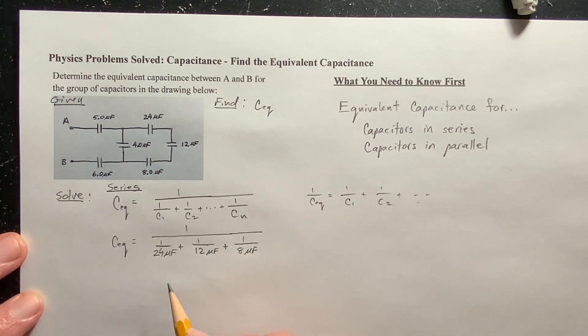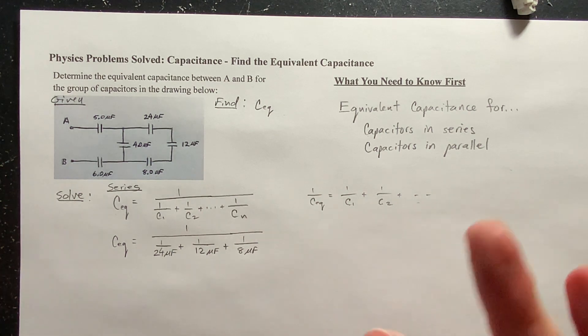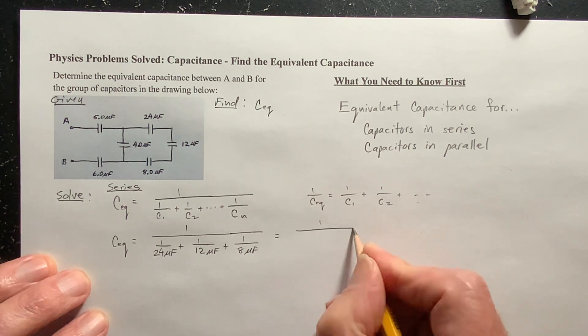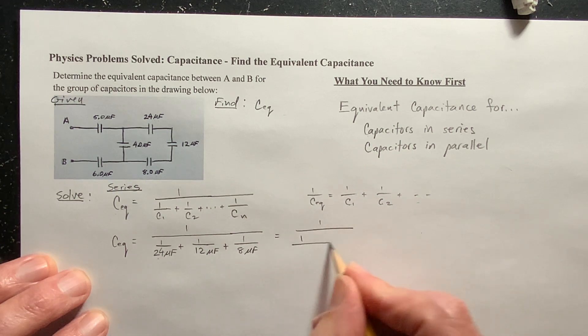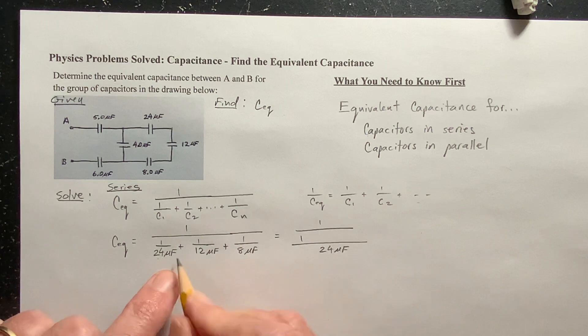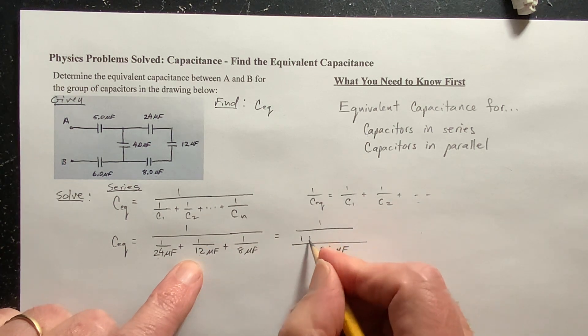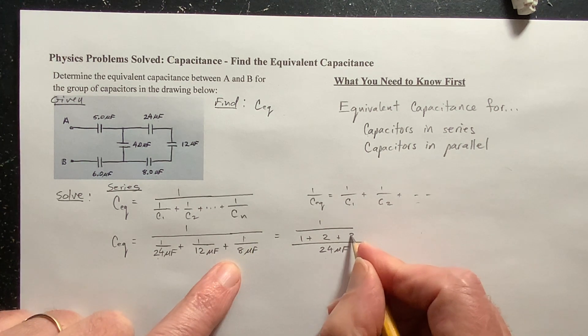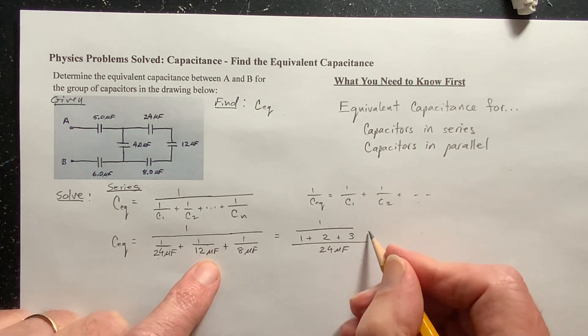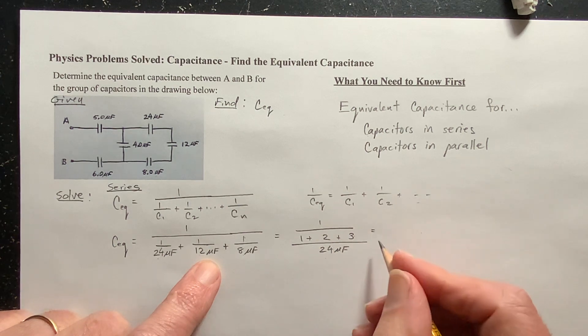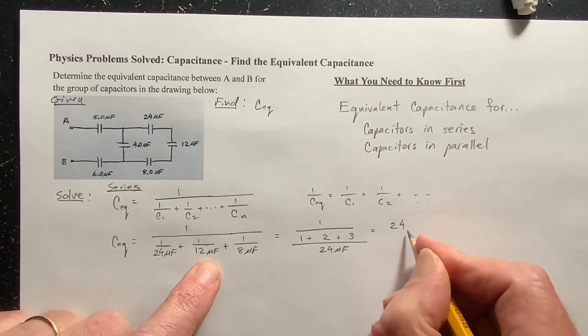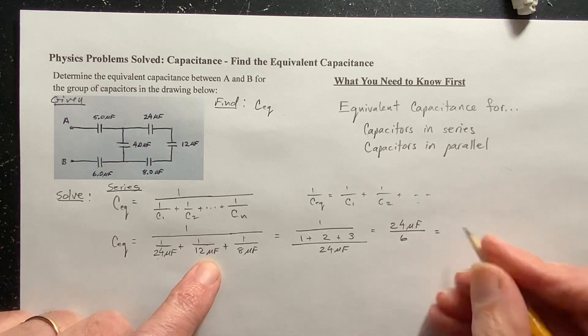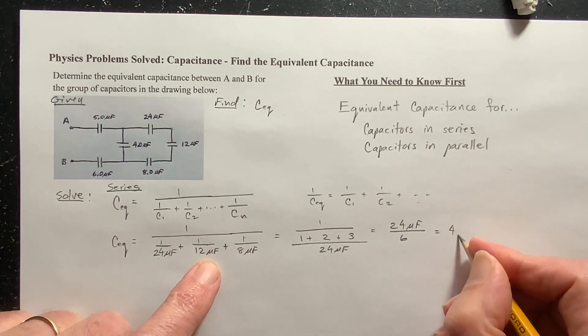Now, you can do this by hand, or you can do it by calculator, however you want to do it. This one, I'm just going to do, because look, it's pretty easy. This is 1 over 1. 24 microfarads, we can make that a common denominator. Well, 1 twelfth is the same as two twenty-fourths, and 1 eighth is the same as three twenty-fourths. So, when I do this, I get 1 plus 2 plus 3 is 6. Reciprocate, I get 24 microfarads divided by 6.